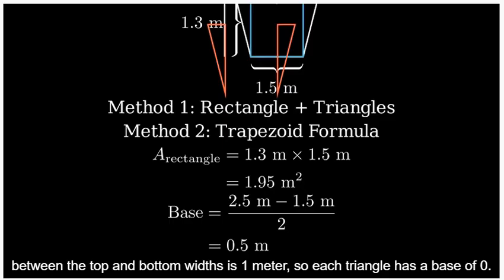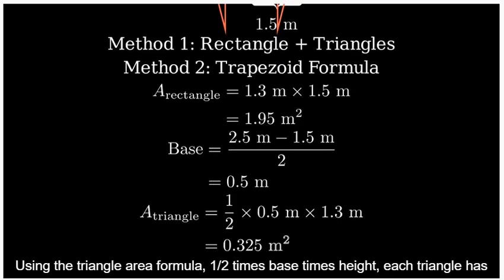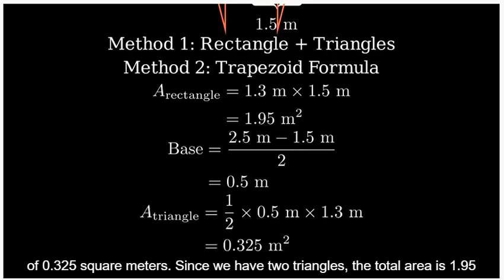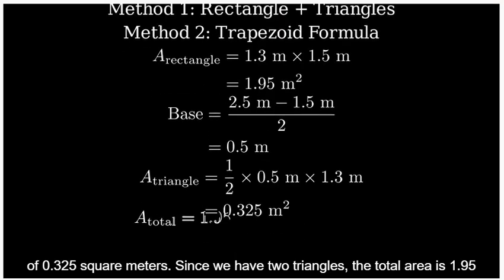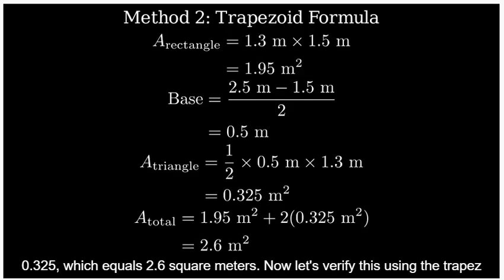So each triangle has a base of 0.5 meters. Using the triangle area formula, 0.5 times base times height, each triangle has an area of 0.325 square meters. Since we have two triangles, the total area is 1.95 plus 2 times 0.325, which equals 2.6 square meters.